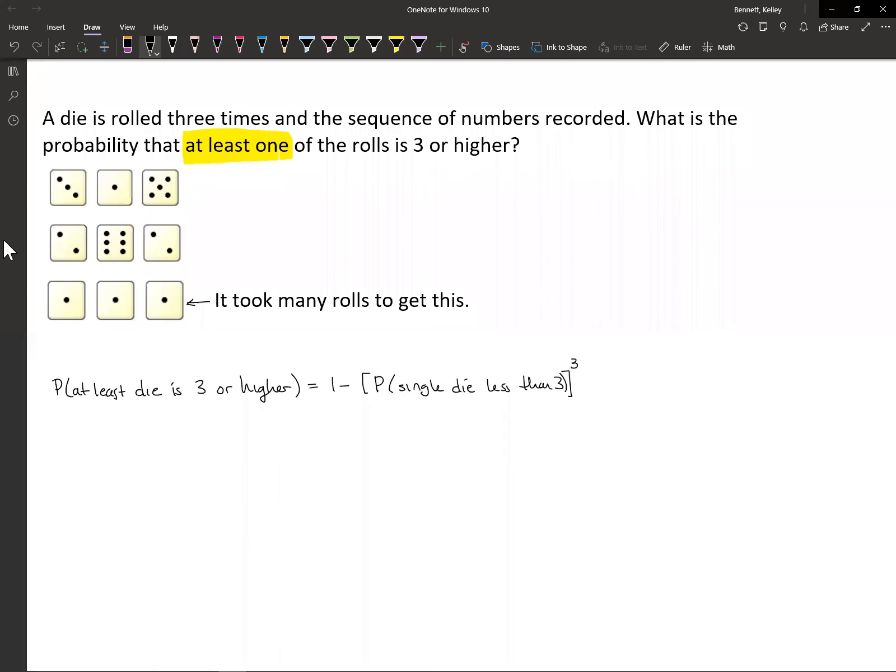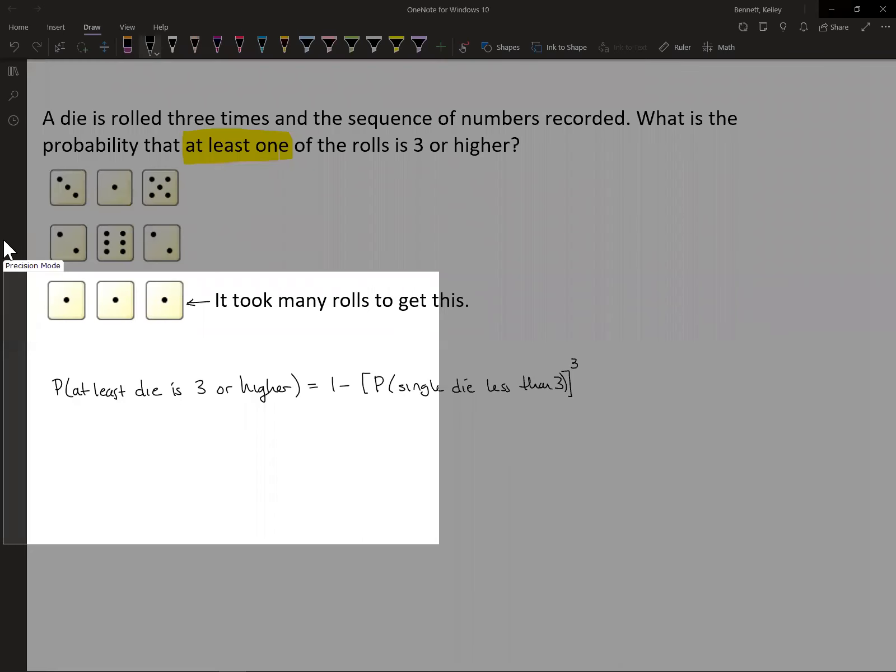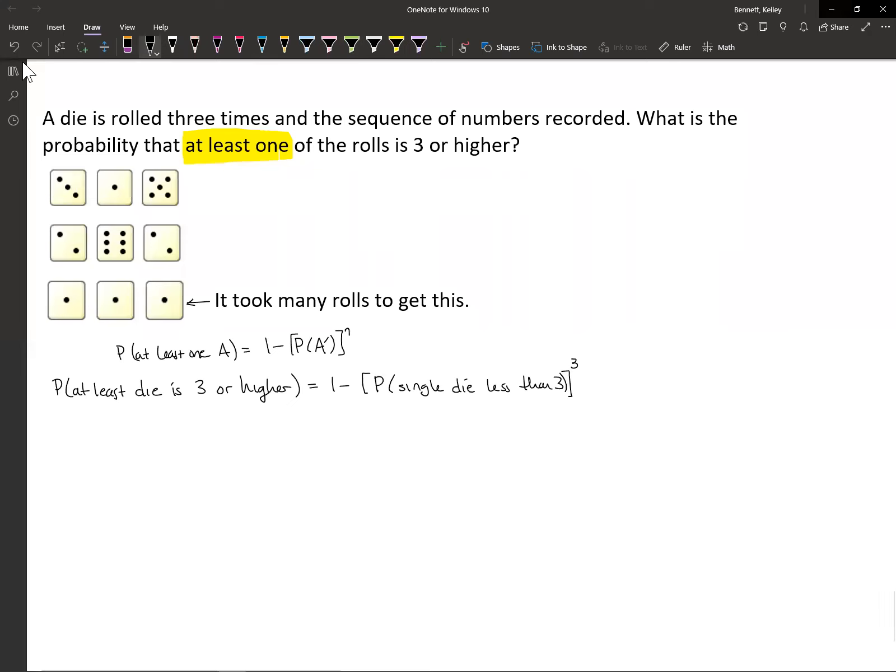What's up with this? Because we've seen it before. Probability of at least one equals one minus—I'll write it like this. We've seen it like this: getting at least one of event A is one minus the probability of A complement to the nth power.